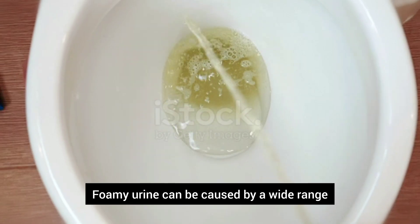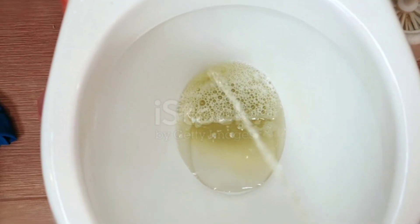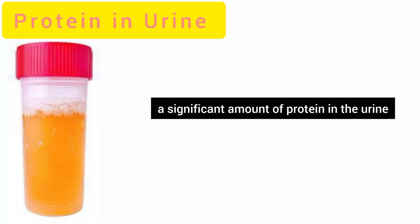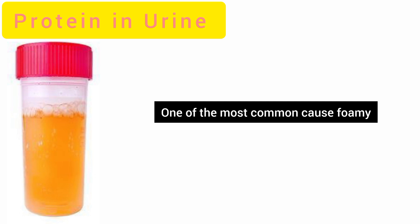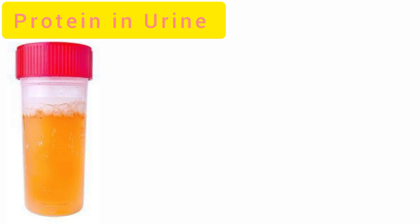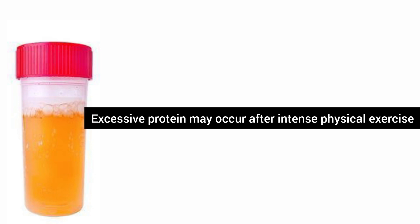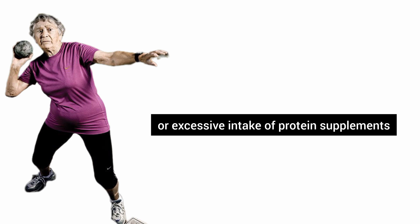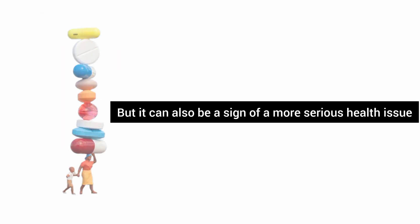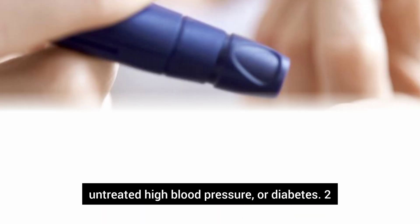Foamy urine can be caused by a wide range of conditions, which includes a significant amount of protein in the urine. One of the most common causes of foamy or bubbly urine is the presence of protein in the urine. Excessive protein may occur after intense physical exercise or excessive intake of protein supplements, but it can also be a sign of a more serious health issue, like kidney problems, untreated high blood pressure, or diabetes.